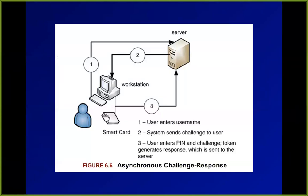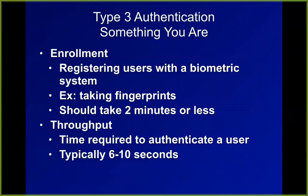In both cases, you're carrying some gadget which has an algorithm to create pseudo-random numbers and the server has the same algorithm and same seed so it can reproduce those numbers. And something you are — type 3 authentication — these are biometrics. The most common is fingerprints — cheapest and easiest.